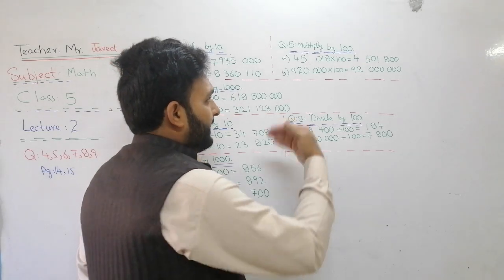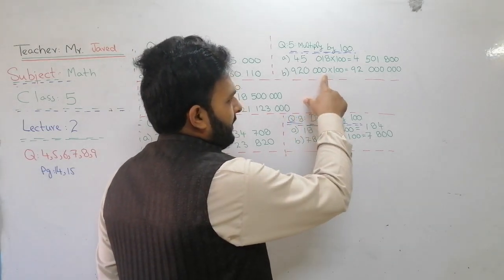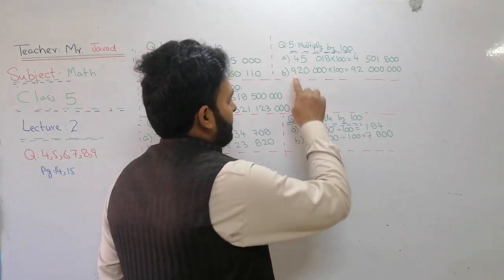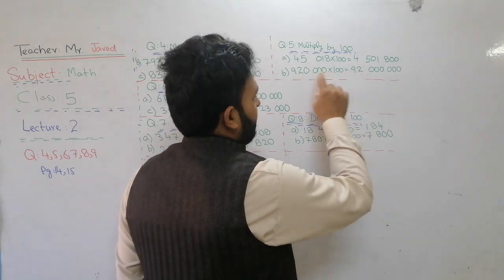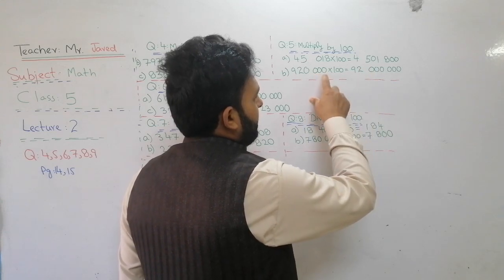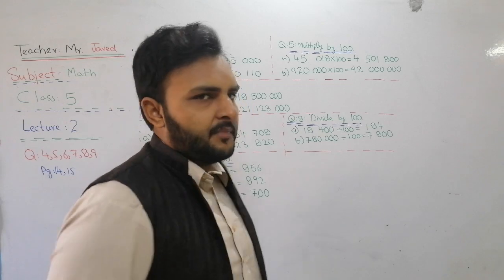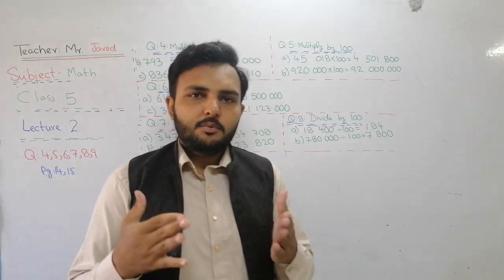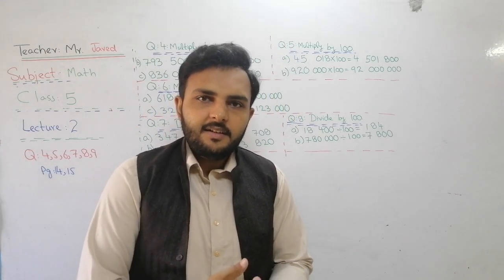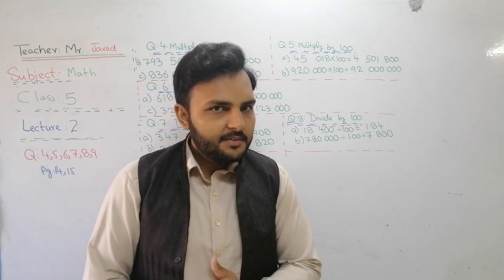The next example: 9, 2, 0, 3, 0 — multiply by 100. We write two zeros at the right side. So 9, 2 remains, and then 1, 2, 3 zeros will be there. After writing the two zeros, write the result in standard form.